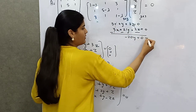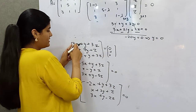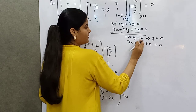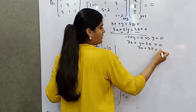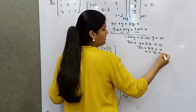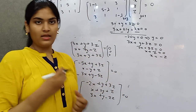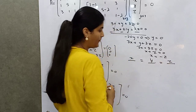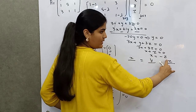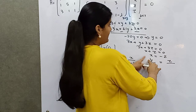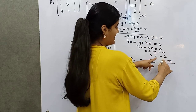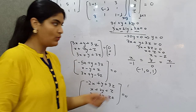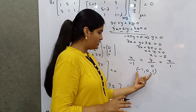Since y = 0, substituting back gives 3x + 3z = 0, so x + z = 0, meaning x = minus z. Writing the eigenvector as [x/y/z], we get x = -1·z, so the coefficients are minus 1, 0, 1. This is the first eigenvector: [-1, 0, 1], corresponding to lambda = -2.